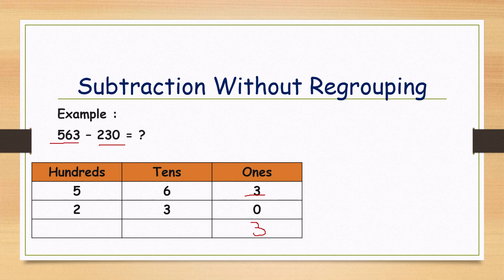Now here in the tens place, six minus three. What is the big number? Six. Where is it placed? On the top. That's why no need to take borrowing. Keep it in your mind six and open three fingers. Subtraction means we are going backward — counting before numbers. Six before five, five before four, four before three. What is six minus three? Three.